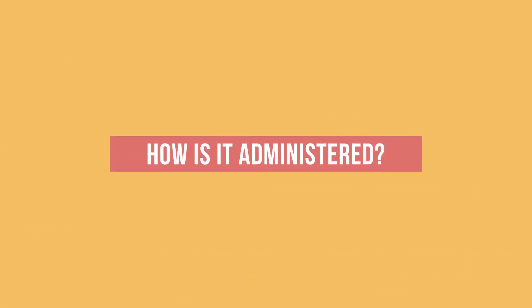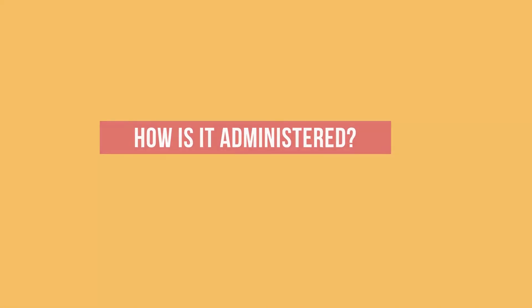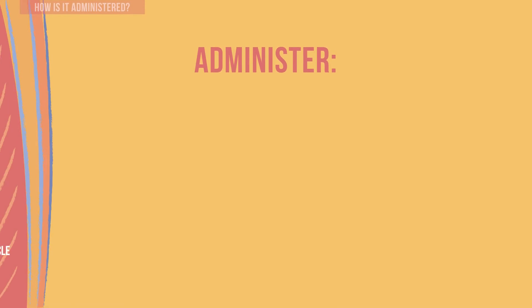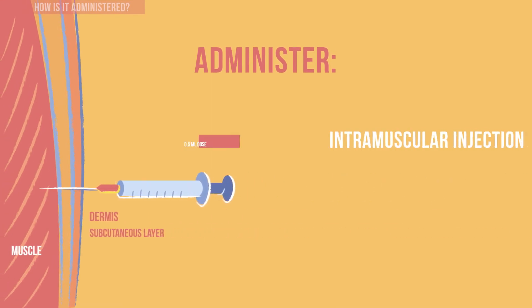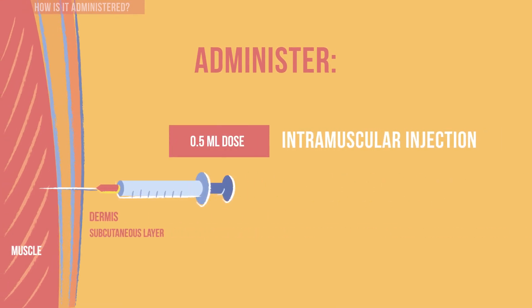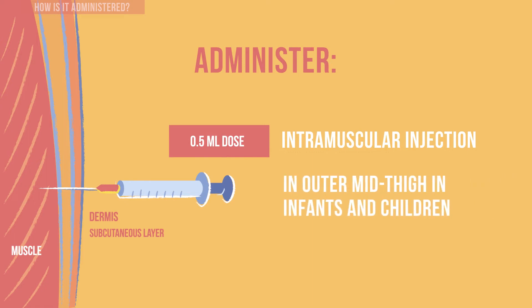How is IPV administered? The vaccine is given in a 0.5 milliliter dose as an intramuscular injection. The injection should be administered in the outer mid-thigh in infants and children.